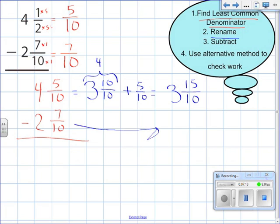Now I move over my second part of the problem. We have 2 and 7 tenths. I subtract. First by subtracting the numerators. 15 minus 7 gives me 8. My denominator stays the same, which is 10. Now I move on to the whole numbers. 3 minus 2 equals 1. I look at my answer. Is it in simplest form? In this case, it's not. The greatest common factor is 2. So my answer is 1 and 4 fifths.